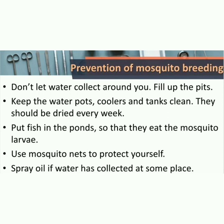We should follow the following steps to prevent mosquito breeding: Don't let water collect around you. Fill up the pits. Keep the water pots, coolers and tanks clean — they should be dried every week. Put fish in the ponds so that they eat the mosquito larvae. Use mosquito nets to protect yourself. Spray oil if water has collected at some place.